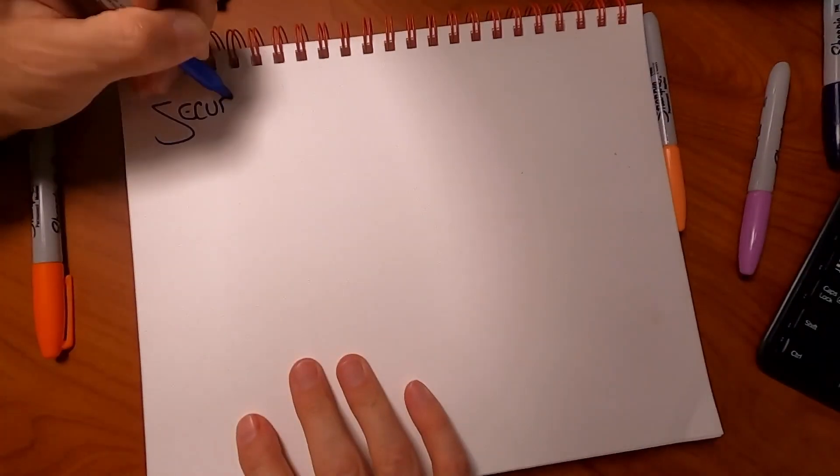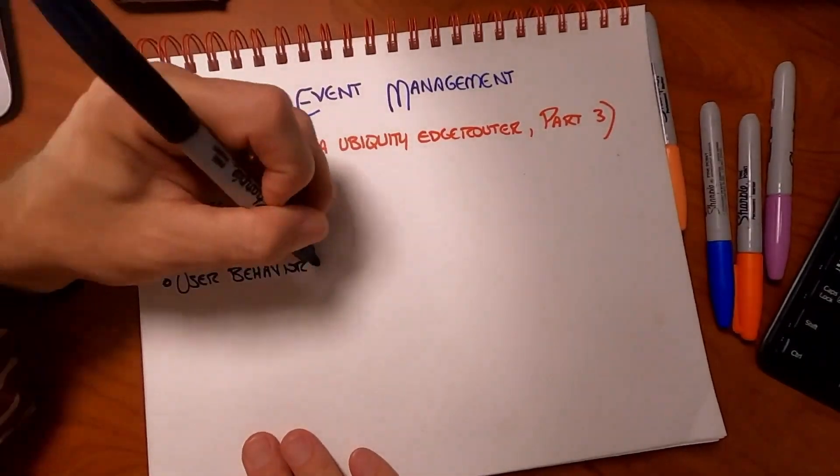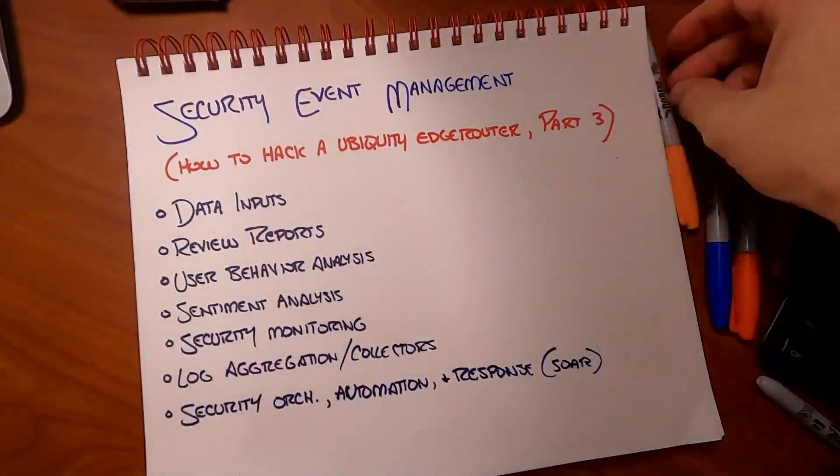To be great at security, you've got to do your homework. We've come to the third and final part of hacking a Ubiquiti EdgeRouter. My goal here is to show how you can get into the mindset of breaking into a device so that you know exactly how somebody's thinking when they're approaching your environment. It's your job to get inside the mind of a hacker, not necessarily to be the hacker.